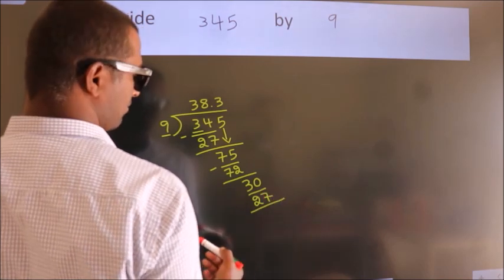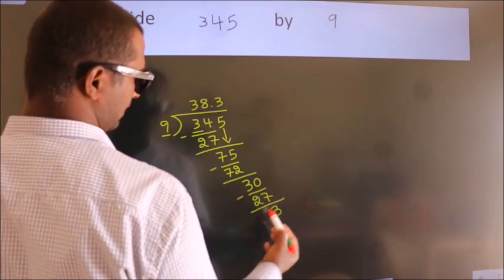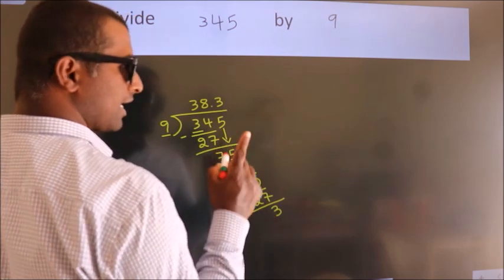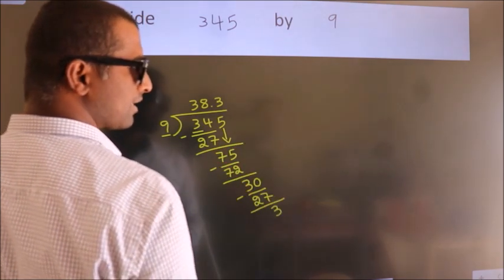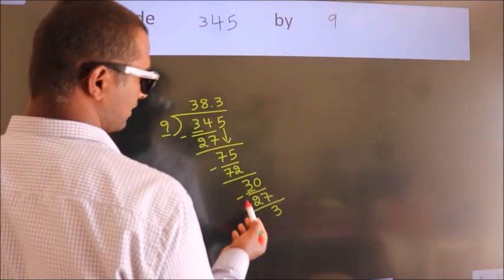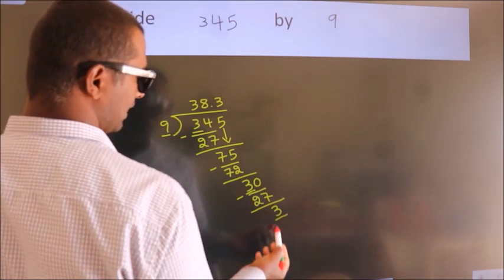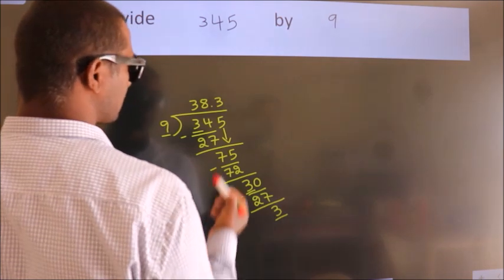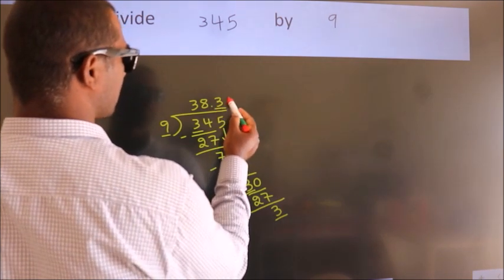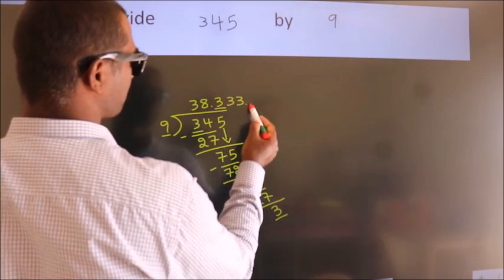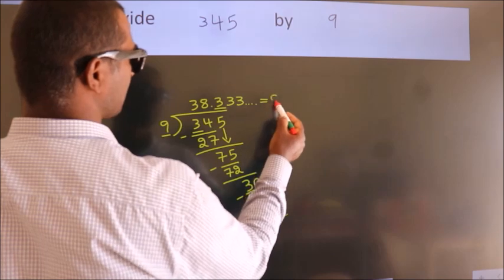Now we subtract, we get 3. Now you observe, here we had 3 and we got 3 again. That means, this number keeps on repeating. So, this is our quotient.